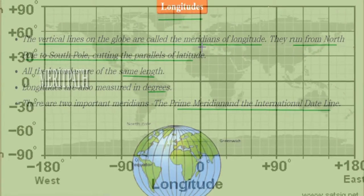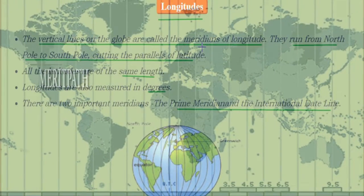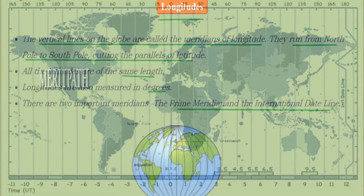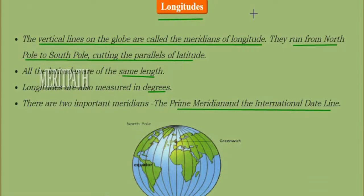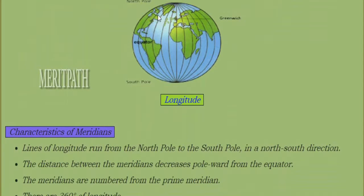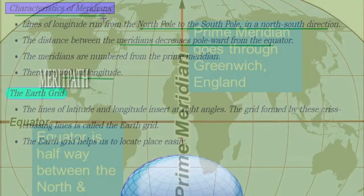Longitudes are the vertical lines that pass on the globe, known as meridians of longitude. They run from the North Pole to the South Pole, cutting across the parallel lines of latitudes. All longitudes are of the same length and are also measured in degrees. Two important meridians are the Prime Meridian and the International Date Line.